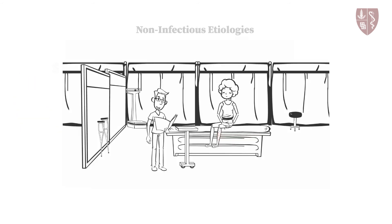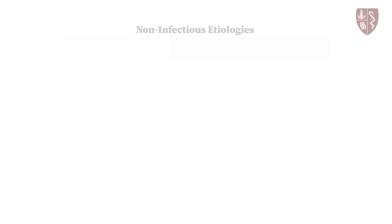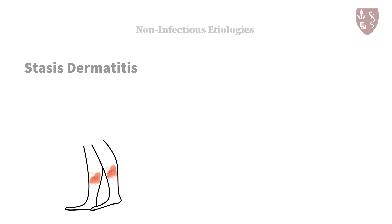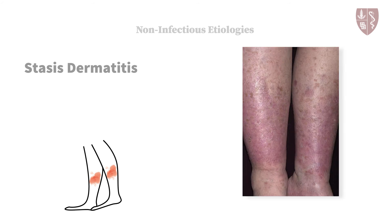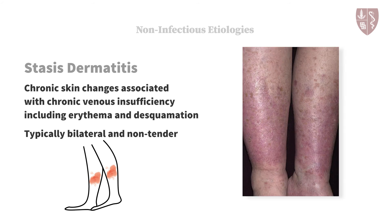If your patient is not responding to or slowly recovering on antibiotics, it is important to consider non-infectious etiologies that can masquerade as cellulitis. Stasis dermatitis may be the most common. It describes the chronic skin changes associated with chronic venous insufficiency, including erythema and desquamation. It is typically bilateral, which is very uncommon in acute cellulitis, and stasis dermatitis is typically non-tender.